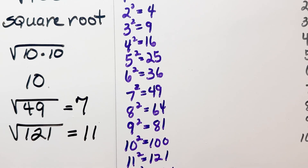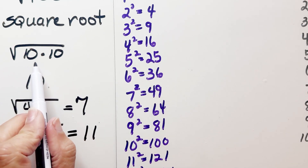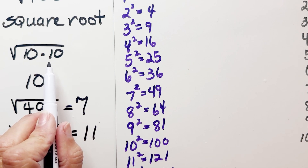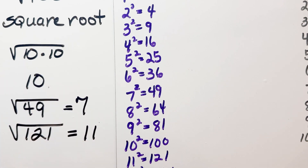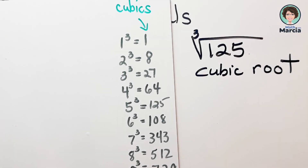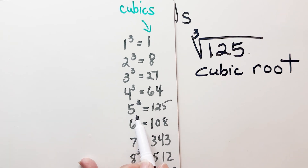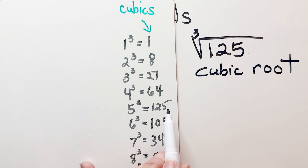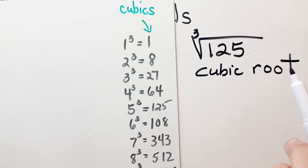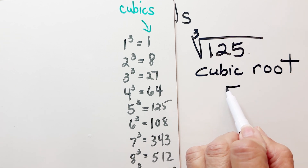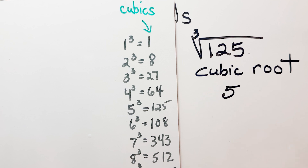Taking it now to cubic roots — instead of thinking about twin factors, you have to think of three numbers multiplied together, so we'll call them triplets. Here are some basic listings you may use. A triplet that would equal 125: five cubed is 125, so the cubic root of 125 is five.